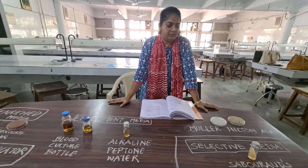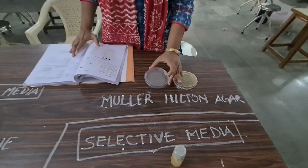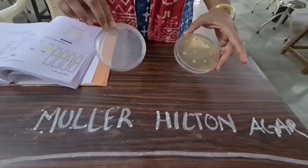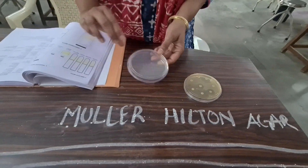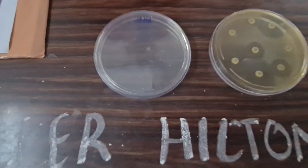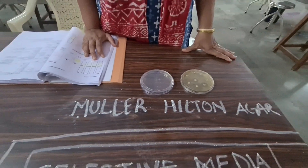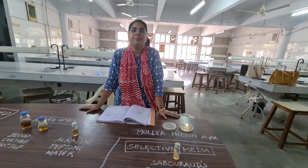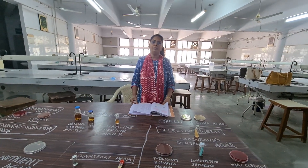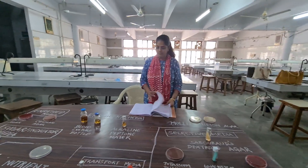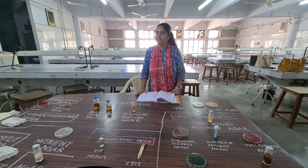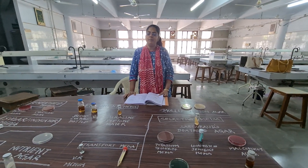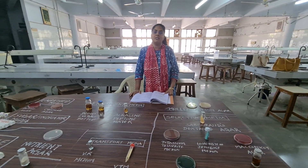Here is a Mueller-Hinton agar plate used for antibiotic susceptibility testing. This is all about media — its content and its uses. Now, the method of sterilization of media: most media are sterilized by autoclave, but sugar-containing media are sterilized by tyndallization. Serum- and egg-containing media like Loeffler's serum slope, Rosette medium, and Lowenstein-Jensen medium are also sterilized by tyndallization.